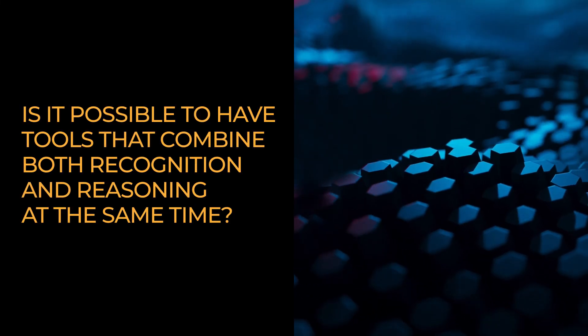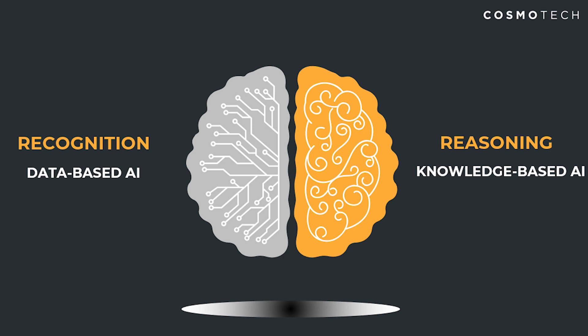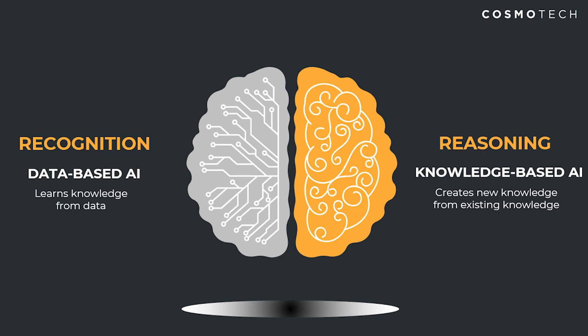Welcome to this new video in our series, Demystifying AI. What we are going to do is answer the question: is it possible to have tools — software tools, AI — that are at the same time based on recognition and based on reasoning, using recognition and reasoning, being based on data and being based on knowledge? We have seen that there are these two kinds of AI, but is it possible to have both at the same time?